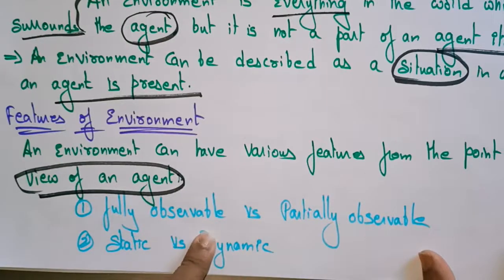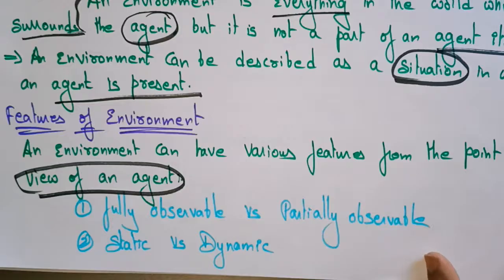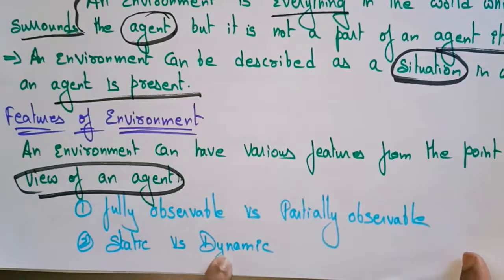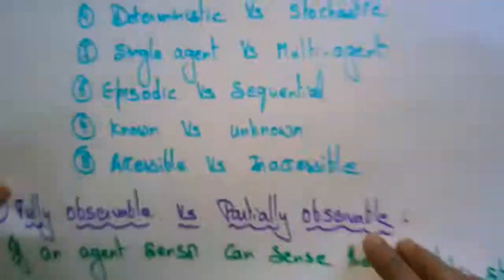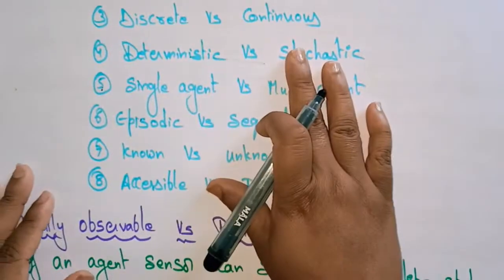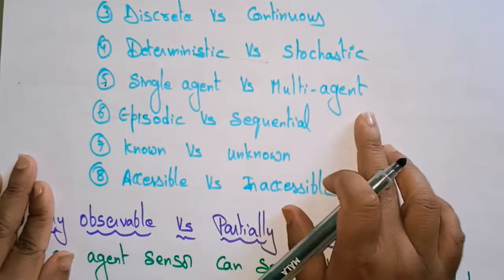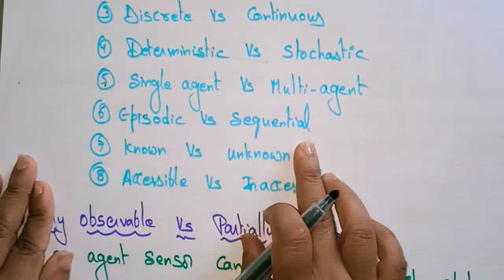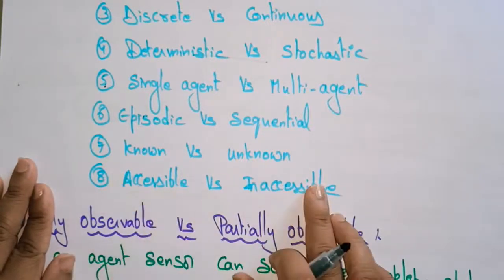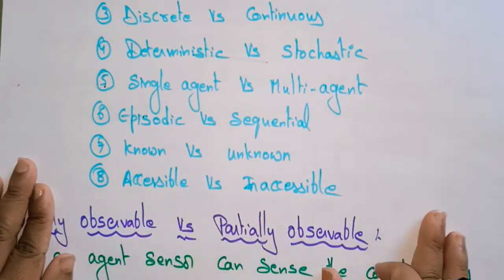The features of environment from the agent's perspective are: fully observable versus partially observable, static versus dynamic, discrete versus continuous, deterministic versus stochastic, single agent versus multi-agent, episodic versus sequential, known versus unknown, and accessible versus inaccessible.